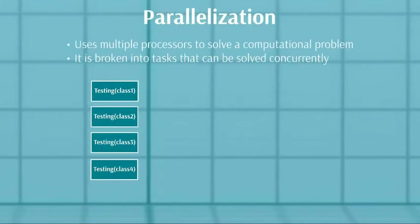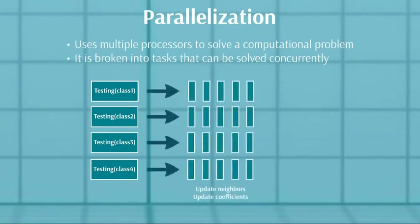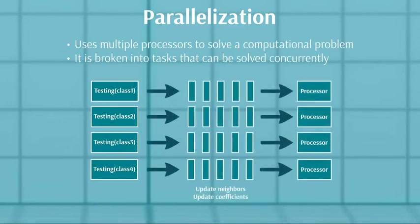Next, we parallelized our code by splitting up each section by class. Then we ran specific tasks on multiple processors, which significantly reduced the execution time in both the training and testing stages.